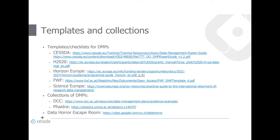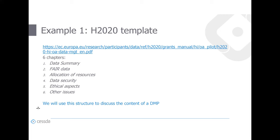There is even a data horror escape room for DMPs if you'd like to use that approach. In the Horizon 2020 template, the DMP is structured in six chapters: a data summary, a description of FAIR data, a chapter on allocation of resources, a chapter on data security, a chapter on ethical aspects, and on so-called other issues. We will use this structure to discuss the content of DMPs in this presentation.